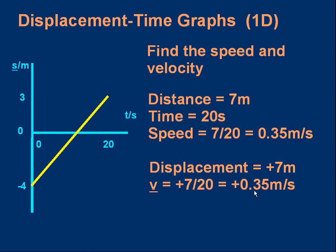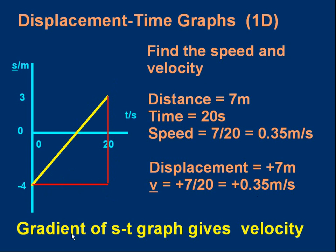You'll notice something very interesting, I hope. And that is the gradient of this graph. Let's draw in our triangle. The gradient, the rise over the run, will be plus 7 over 20. And that's the same as our velocity. The gradient of the triangle is the velocity. And that is a key point for you to remember. The gradient of a displacement time graph gives the velocity. Very important point.